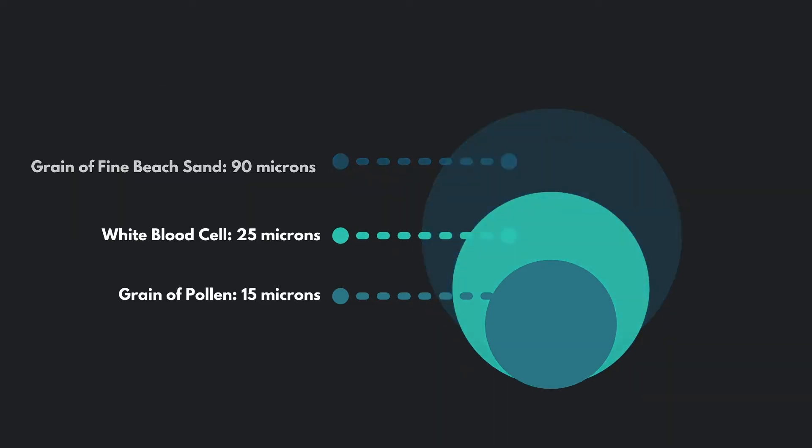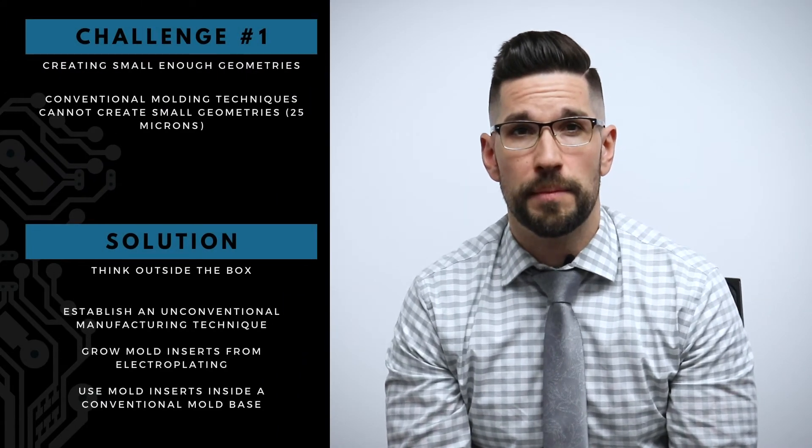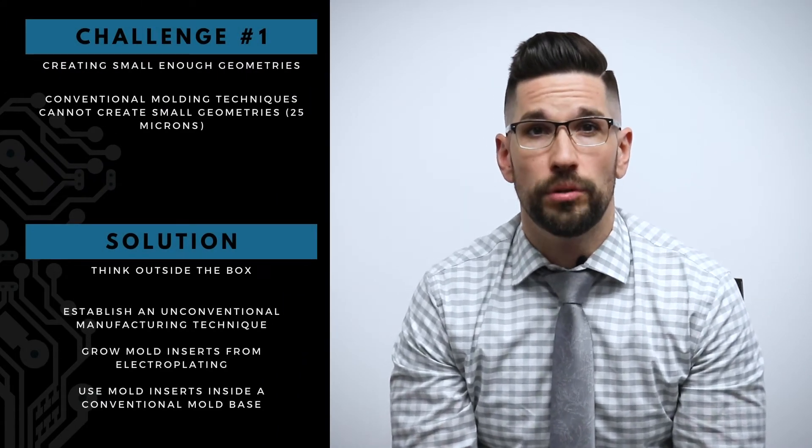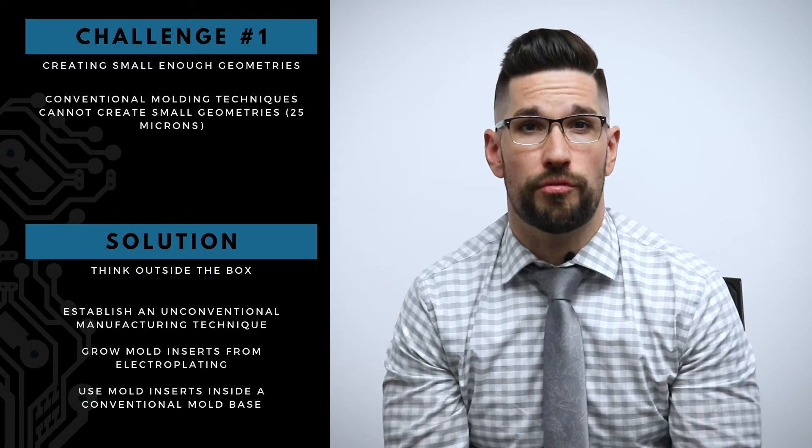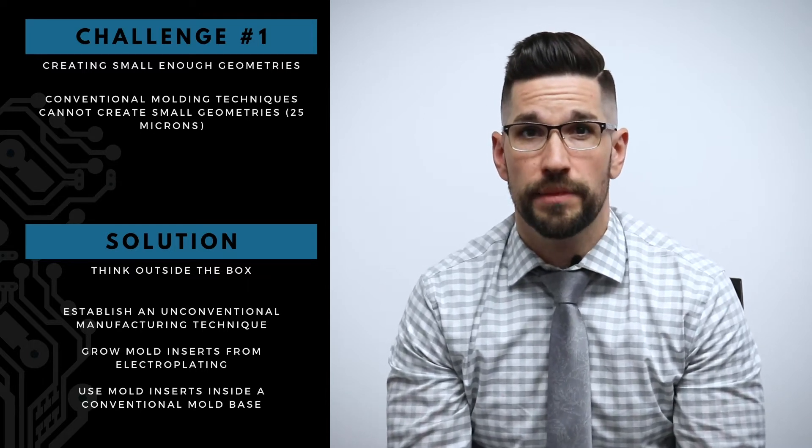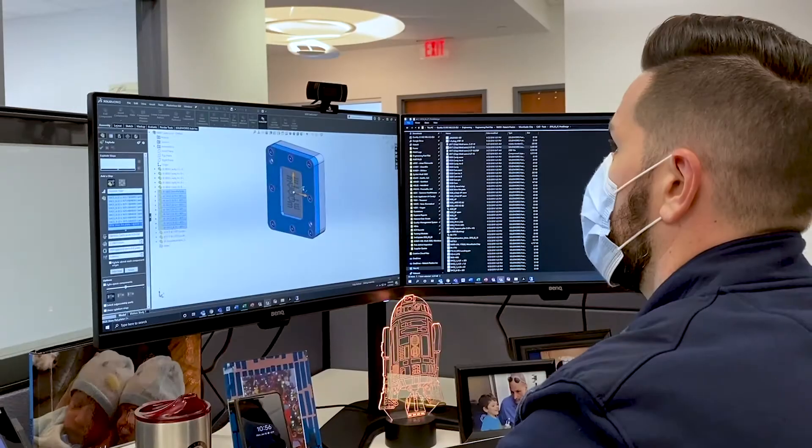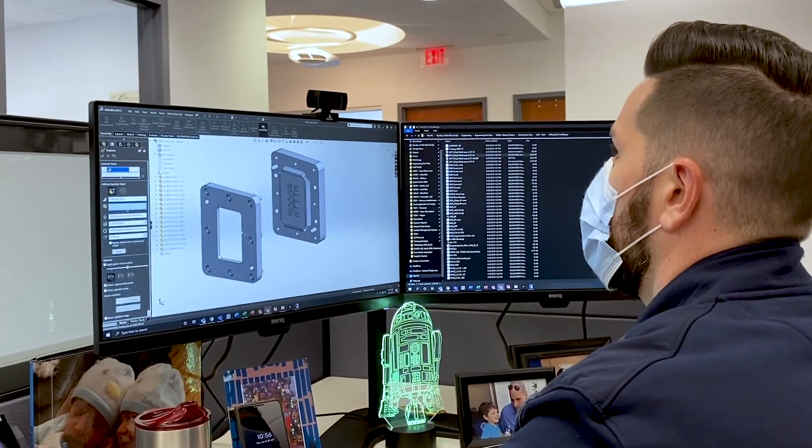So when you're considering something that small, you have to go outside the box and investigate different types of manufacturing techniques that can make a mold insert of some kind with features that are that small. So what we ended up establishing was an unconventional manufacturing technique that's kind of comparable to 3D printing, where mold inserts are basically grown from the electroplating process and we're able to utilize those mold inserts inside of a conventional mold base.